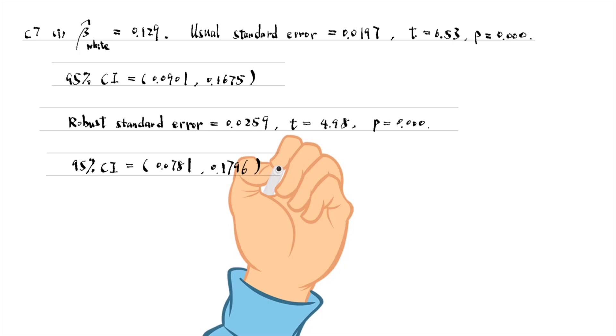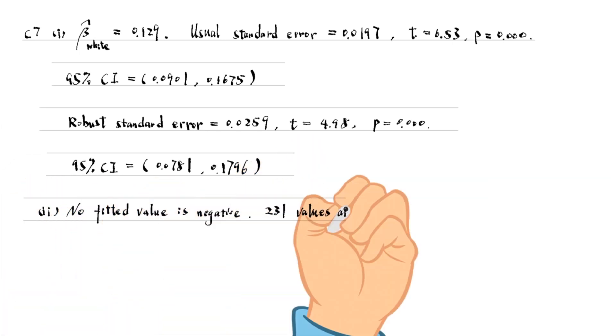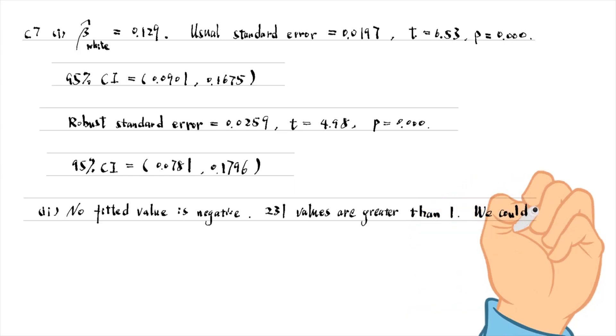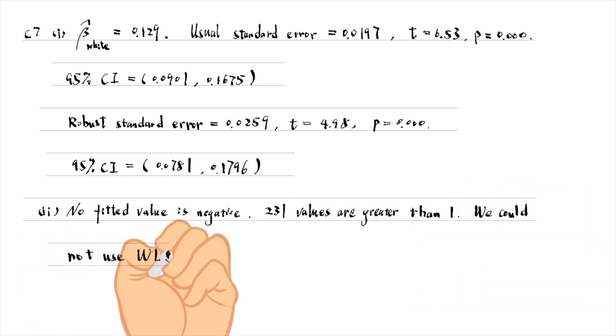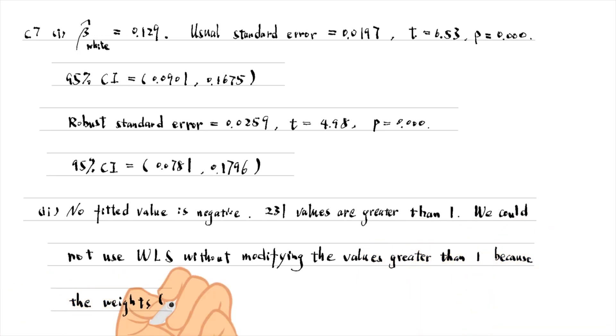We use the predict command with the xb option to obtain the fitted values as usual. No value is negative. 231 values are greater than 1. We could not use the weighted least squares without modifying the values greater than 1 because the weights become negative for those values.